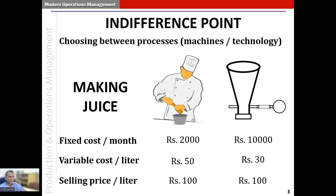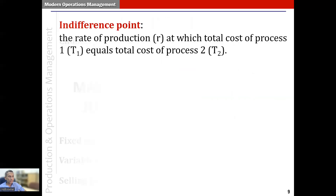The revenue does not depend on which approach is taken — it is constant. Intuitively, one option has a higher fixed cost while the other has a higher variable cost. This points to the idea that there is a particular rate of production at which the total cost of the manual option equals the total cost of the technology option, and on either side of this rate one option will have a higher total cost than the other.